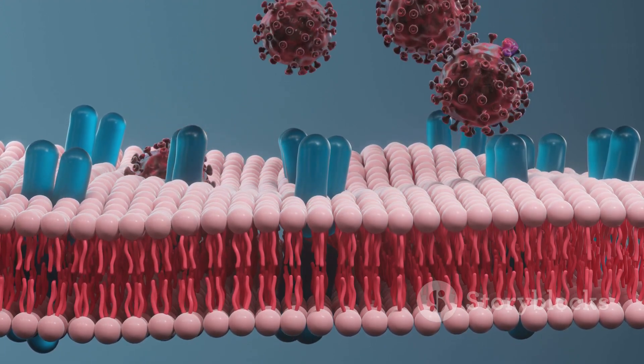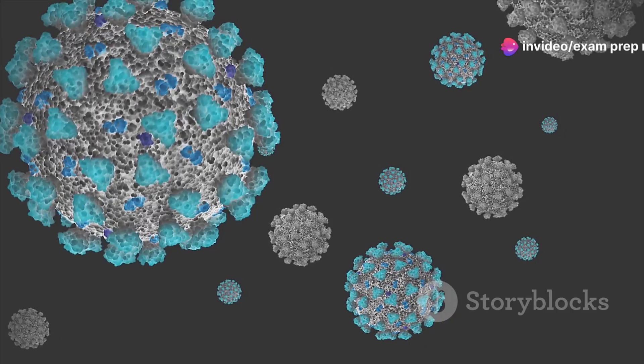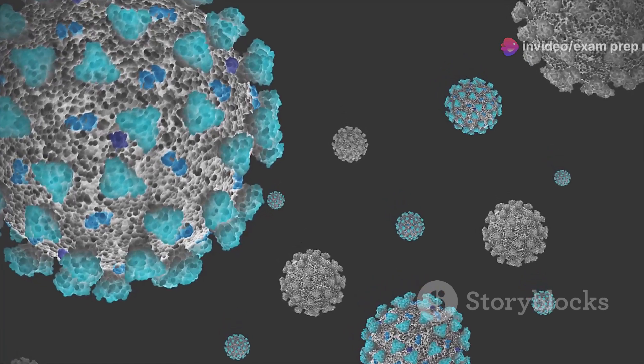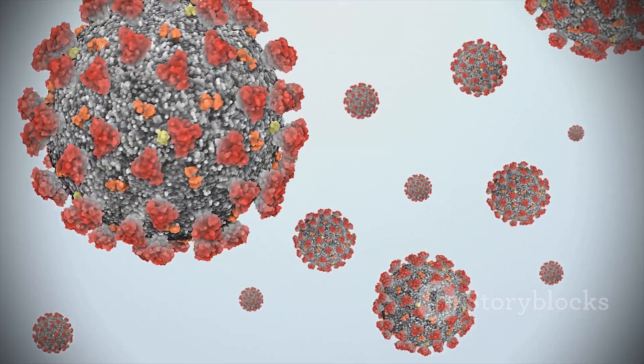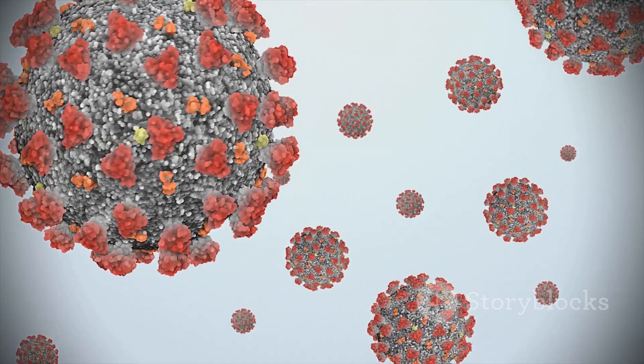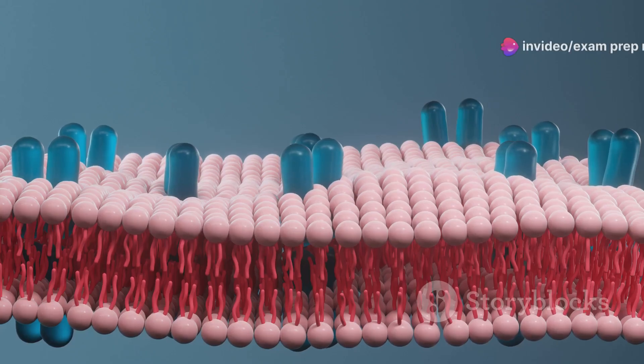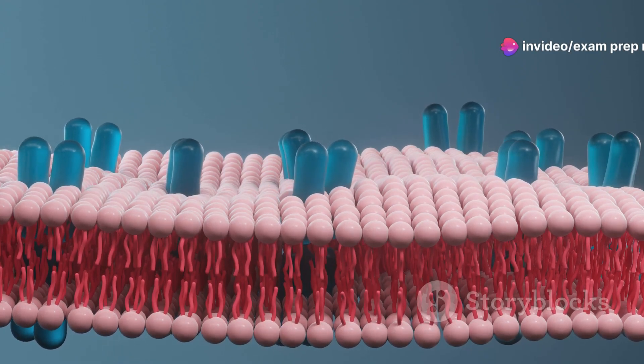Viroids primarily infect plants, and their transmission often occurs through mechanical means, such as contaminated tools or insects. Unlike viruses, which use their genetic material to code for proteins, viroids do not appear to code for any proteins. Their mechanism of pathogenesis remains somewhat of a mystery.